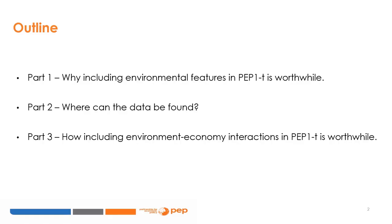Welcome. This module is on how the PEP1T model can be applied to environmental aspects. The aim of this module is to offer you an overview of: one, why accounting for interactions between the economy and the environment is a promising line of research for CGE modeling; two, the types of data needed to apply the PEP1T model to environmental aspects; and three, what types of environmental applications can be considered for the standard PEP1T model.